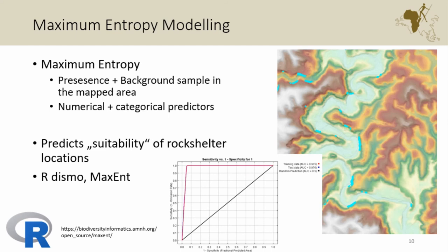We trained a Maximum Entropy model, which is based on presence data from the geomorphological map and a background sample — not absence data. It compares the attributes of our samples to those of the background, identifies where they are specific, and those attributes with important contributions to the model define the response curve and model the suitability — not probability, for mathematical reasons — of each location. We also chose it because it can handle both numerical and categorical data.